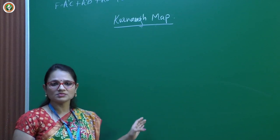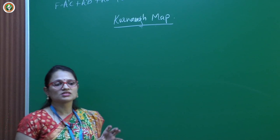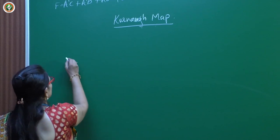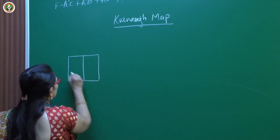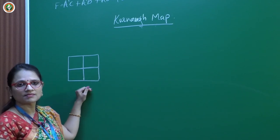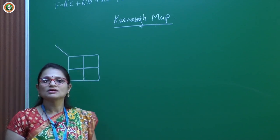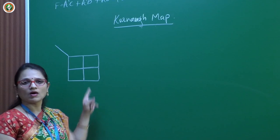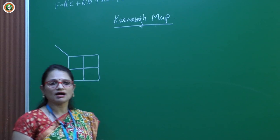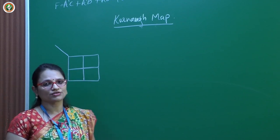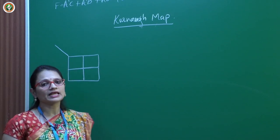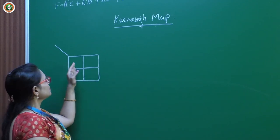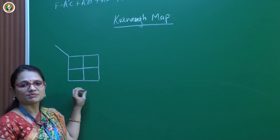Rather than using rows and columns as in a truth table, we use a grid method where each square in the grid represents one minterm. In a 2-variable K-map, all the rows represent one variable and all the columns represent another variable. The given variables can be present in either complemented or non-complemented form. Every square in the Karnaugh map represents one minterm.